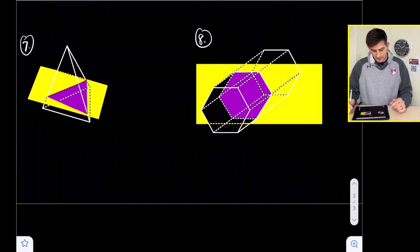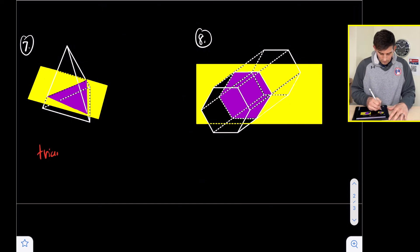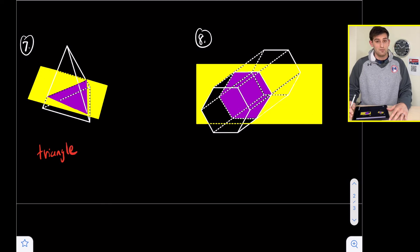Last couple examples. Number seven, we have a triangular pyramid, and we are slicing the top off of it. So our cross section here will be in the shape of a triangle.